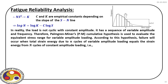In reality, a structure never experiences a purely cyclic load with constant amplitude. In general, it has a sequence of variable amplitude loads with different frequencies. For this, we use the Palmgren-Miner summation to identify the cumulative damage. We plot a histogram of stress range versus frequency for a particular structure, and from that histogram we apply Palmgren-Miner summation to quantify the cumulative damage.